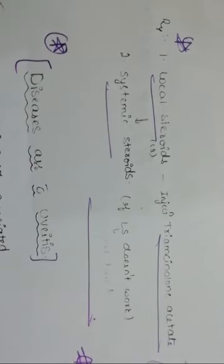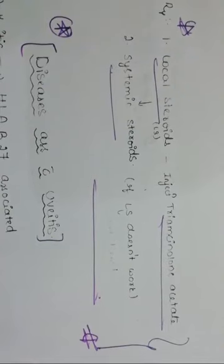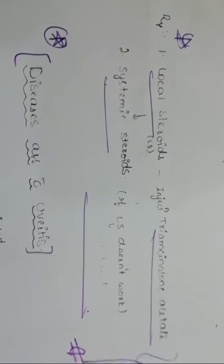The treatment for posterior uveitis is local steroids — injection of triamcinolone acetate. If not cured by local steroids, then systemic steroids are given. In the next session we will be dealing with the diseases associated with uveitis. Thank you.